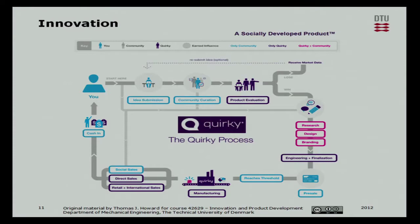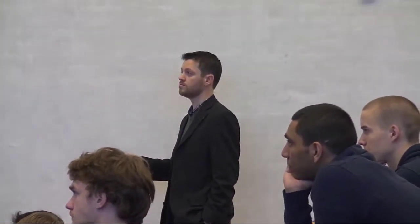You'll submit an idea, the community will look at your idea and evaluate it. If enough people say 'this is a cool idea, I like it, I want to get behind it,' then the Quirky team will say 'OK, we like this project, we'll let it go live.' If people aren't interested, they won't vote for it — it's a good signal that something is fundamentally wrong with your business. It will lose and you'll receive the market data.